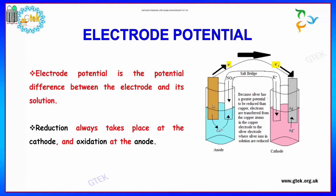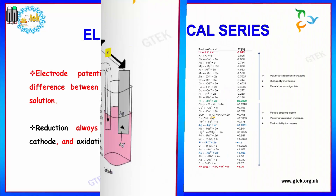The electrode potential is the potential difference between the electrode and the solution. Reduction always takes place at the cathode and oxidation will happen at the anode.